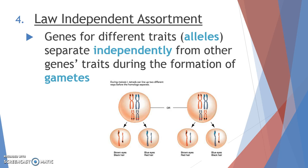His last rule is called the law of independent assortment. This says that different traits are going to separate independently from each other. We have 46 chromosomes total in each of our cells, and the 23 pairs of chromosomes have all the different genes for all the different traits that make us look like us. When I have a gene for hair color on chromosome number one and a gene for height found on chromosome number two, the way that they line up and separate during meiosis is going to be different from each other.